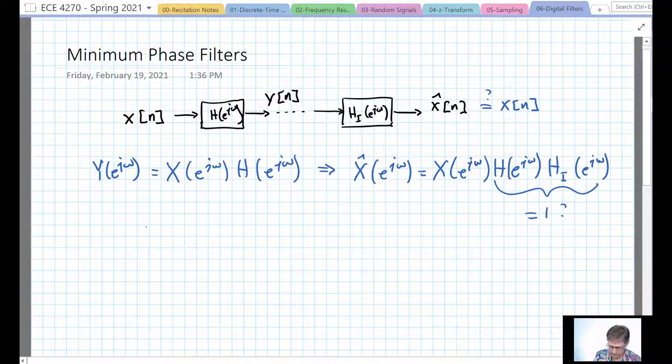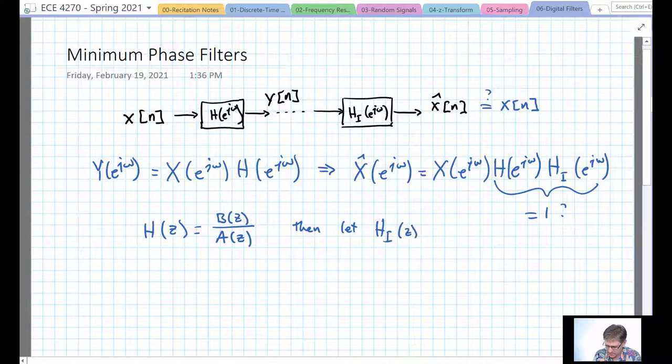Can we do it? Well sure. So if H(e^(jω)), I'm going to start putting this in terms of the Z transform just for ease, is equal to some polynomial in Z in the numerator and some polynomial in the denominator here, we'll call this B(z) and this would be A(z). Then we just let H_I(z) be A(z) over B(z) and we're done. We can perfectly invert a system.